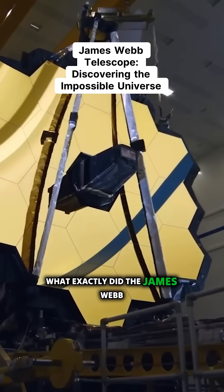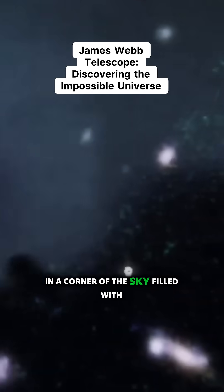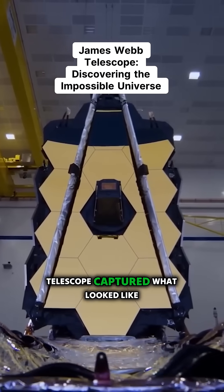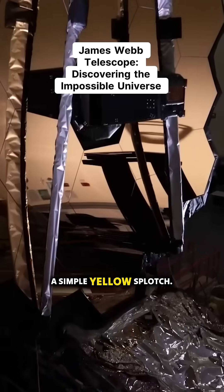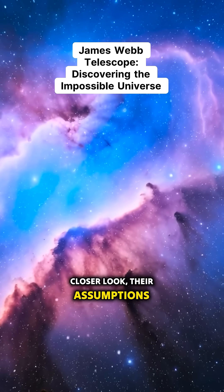What exactly did the James Webb Telescope find at the very edge of everything? In a corner of the sky filled with ancient light, the James Webb Telescope captured what looked like a simple yellow splotch. But when astronomers took a closer look, their assumptions collapsed.